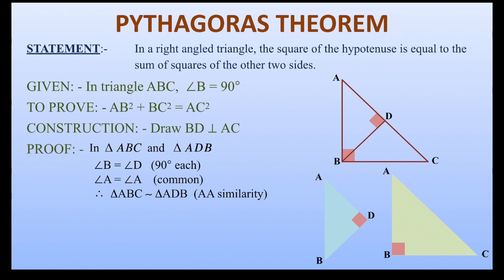And we know that if triangles are similar, then the ratio of their corresponding sides are equal. So, we get here AB/AD = AC/AB. And by cross multiplication, we get AB² = AC × AD. Let's say this is our result 1.